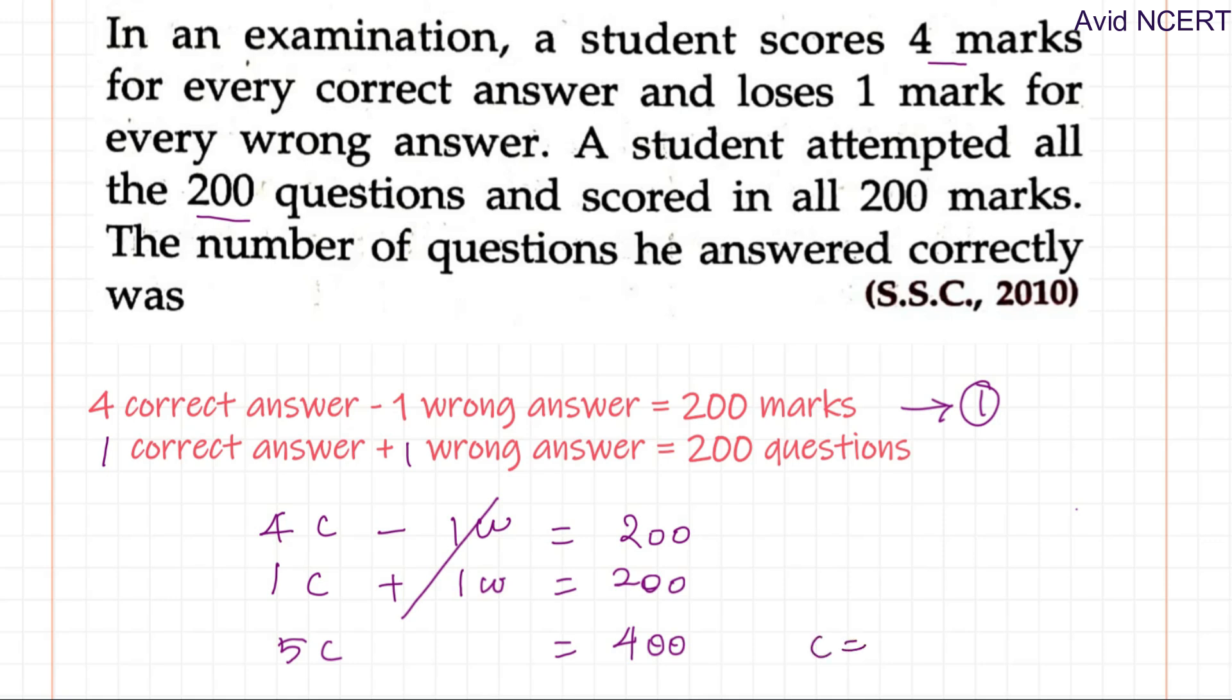Therefore, 5C equals 400. So C equals 400 divided by 5 which equals 80. So therefore, the number of questions he answered correctly was 80.